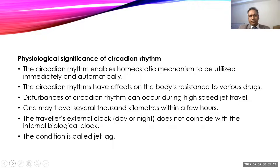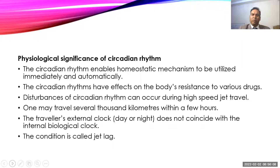Circadian rhythm can also show resistance to various drugs at particular times of day, so medicines should be adjusted accordingly. When the circadian rhythm is disturbed by traveling from one part of the world to another at high speed — such as by airplane — the external clock and internal clock suddenly differ. This condition is called jet lag, which can be experienced for seven to fifteen days.